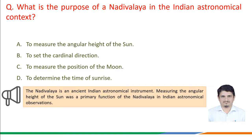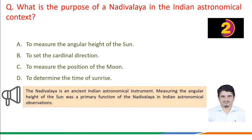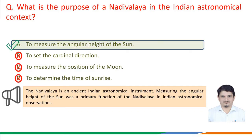To answer this question correctly, we may recall the Nadiwalaya is an ancient Indian Astronomical Instrument. Measuring the angular height of the sun was a primary function of the Nadiwalaya in Astronomical Observation. Therefore, the correct answer is option a: Nadiwalaya was used to measure the angular height of the sun.